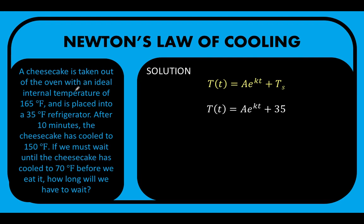Also, it is given that when the cheesecake is taken out of the oven, that means time is equal to zero, the temperature is 165 degrees Fahrenheit. So that means we can replace this T(t) by 165 degrees Fahrenheit, and that happens when time is equal to zero.